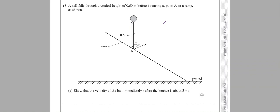For question 15, a ball falls through a vertical height of 0.6 meters before bouncing at point A on a ramp. The velocity of the ball immediately before the bounce is 3 meters per second.